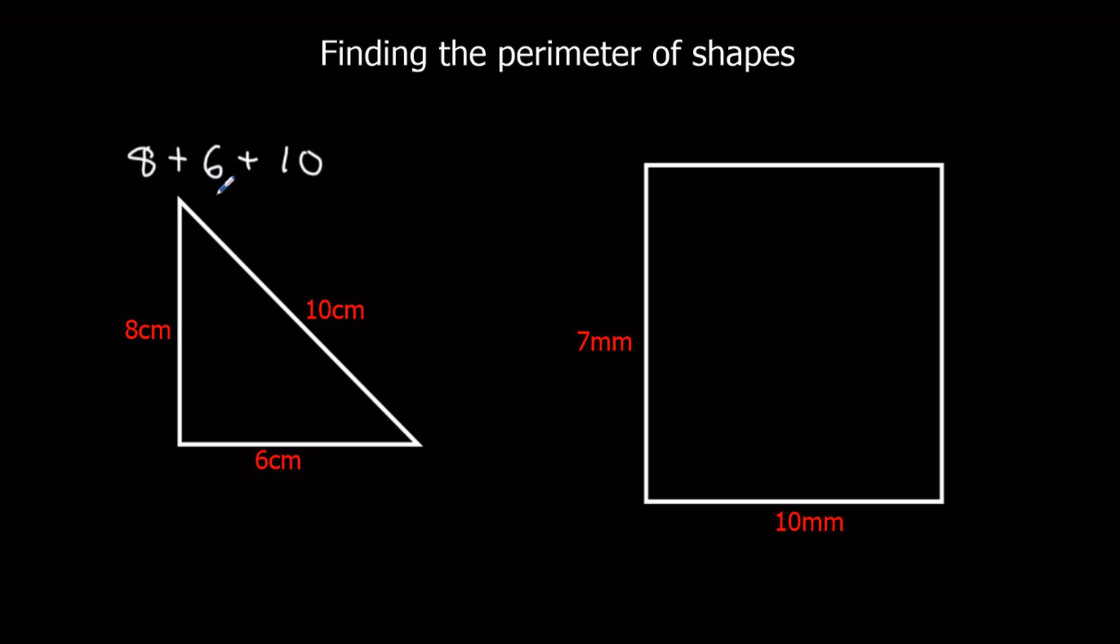So 8 plus 6, that's 14, plus 10, that's 24 centimeters. So the total length around the edge of the shape is 24 centimeters, and that's the perimeter. So that's the answer.